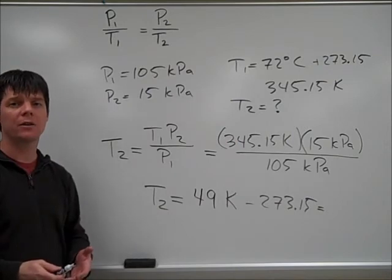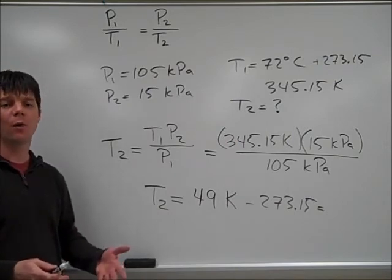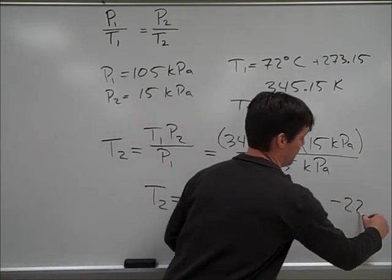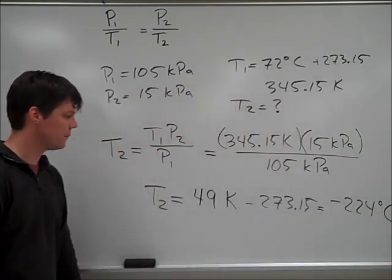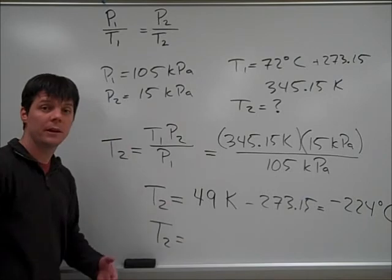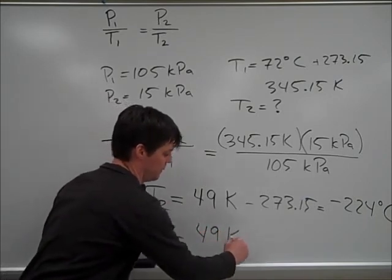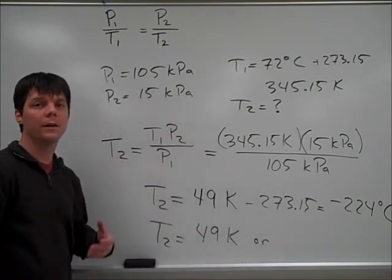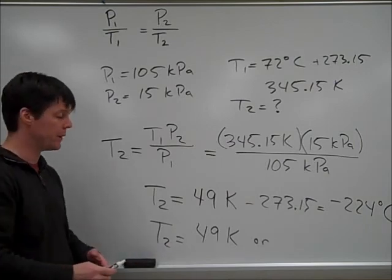This would allow us to calculate an answer of negative 224 degrees Celsius. So again, our final answer is either 49 Kelvin or negative 224 degrees Celsius.